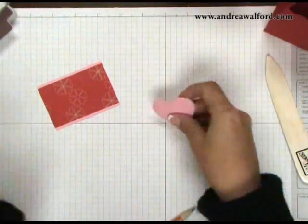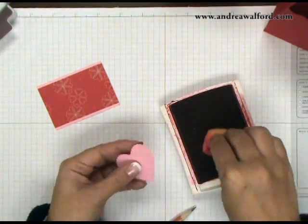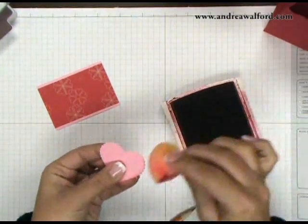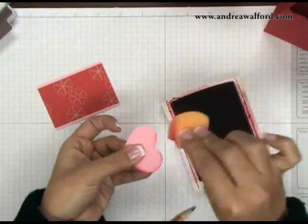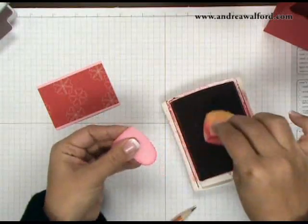And that's how you're going to end up with this embossed heart. So now that I have that, what I want to do is add a little bit of Real Red sponging around the outer edges. And to do this, I'm just using a Wedge of Stamping Sponge and my Real Red Classic Ink.